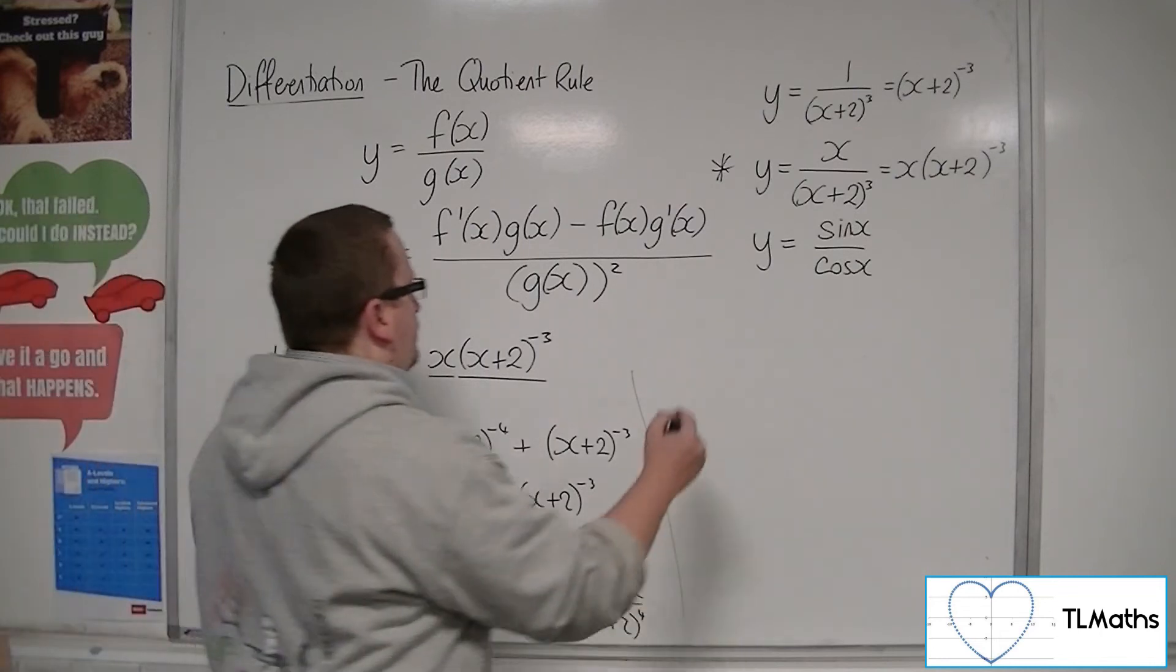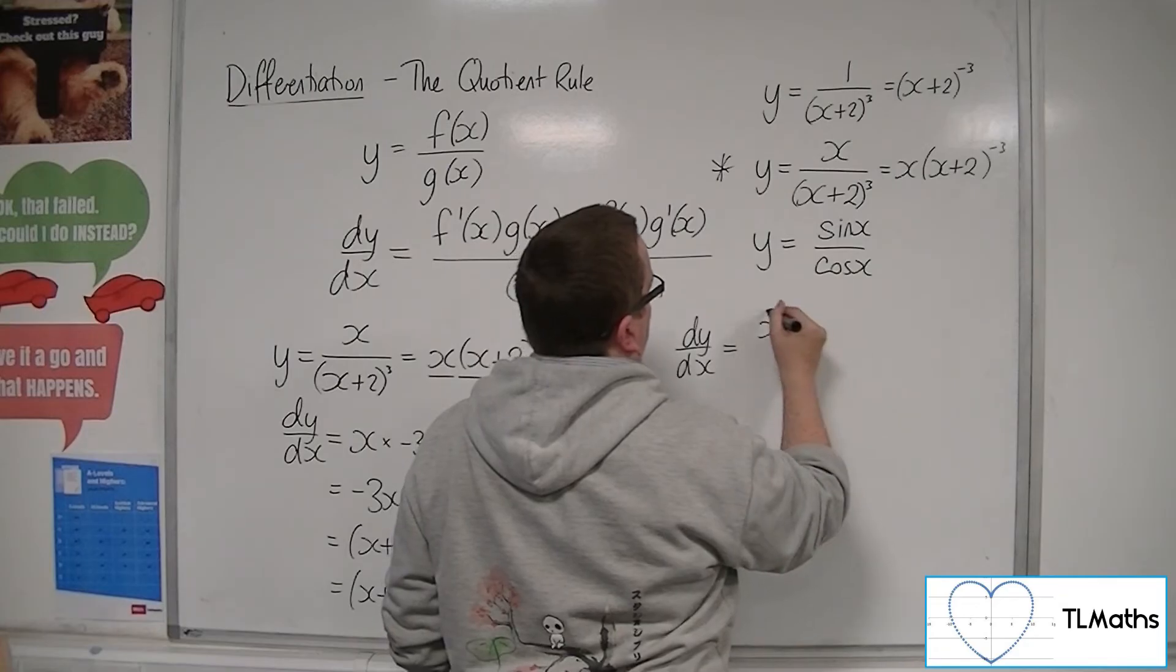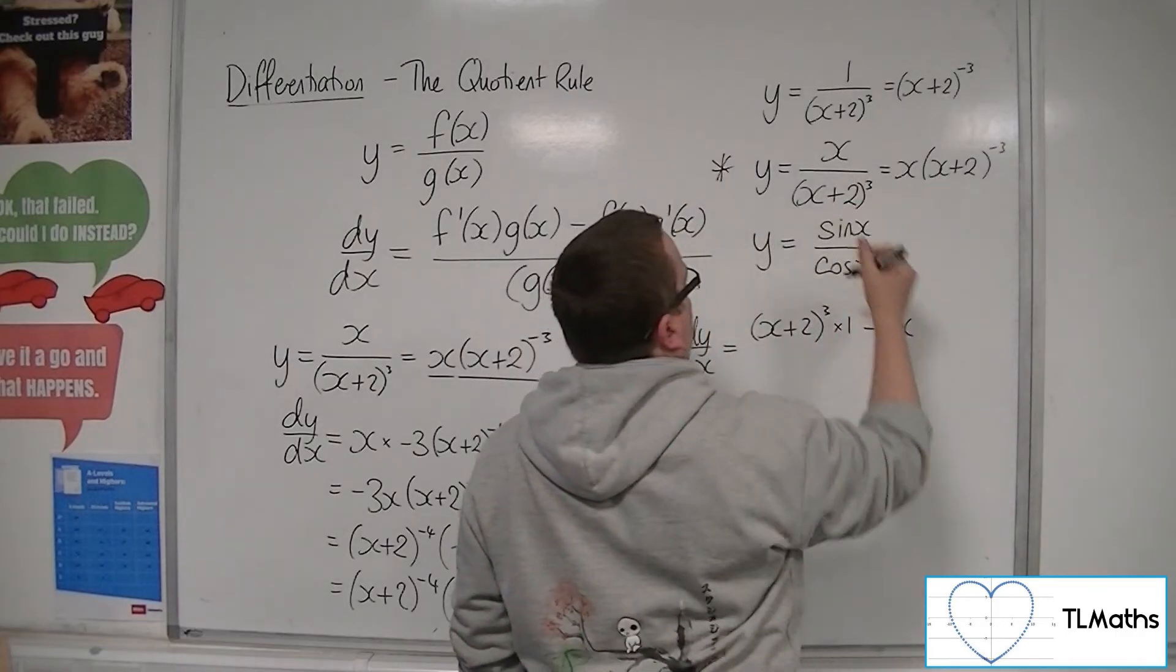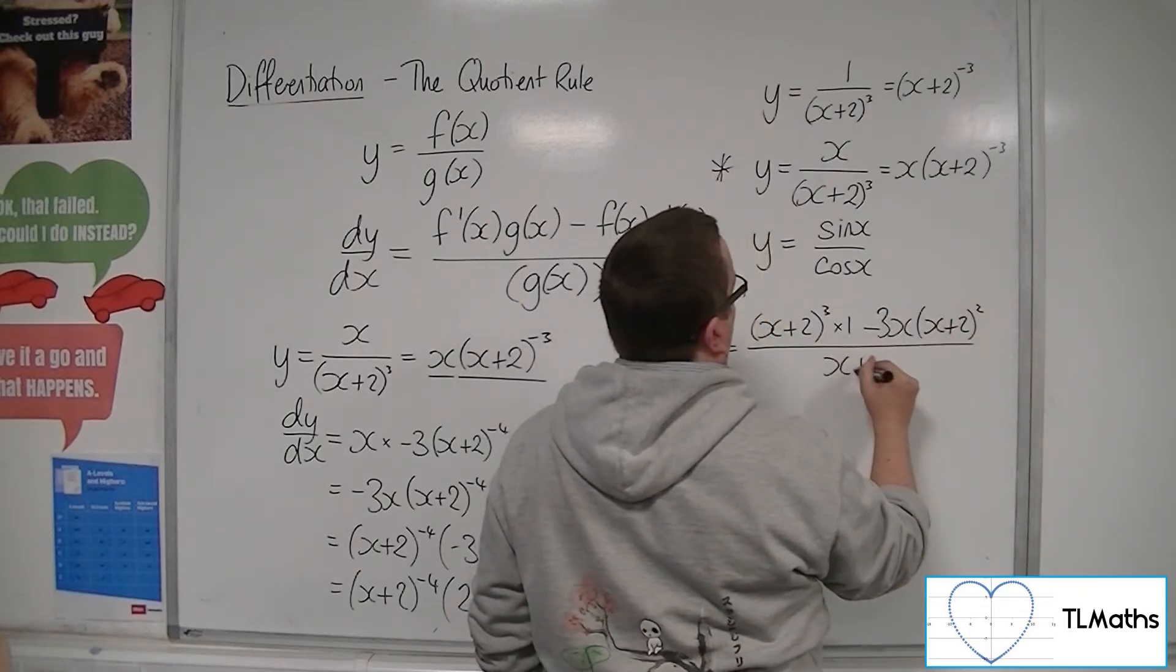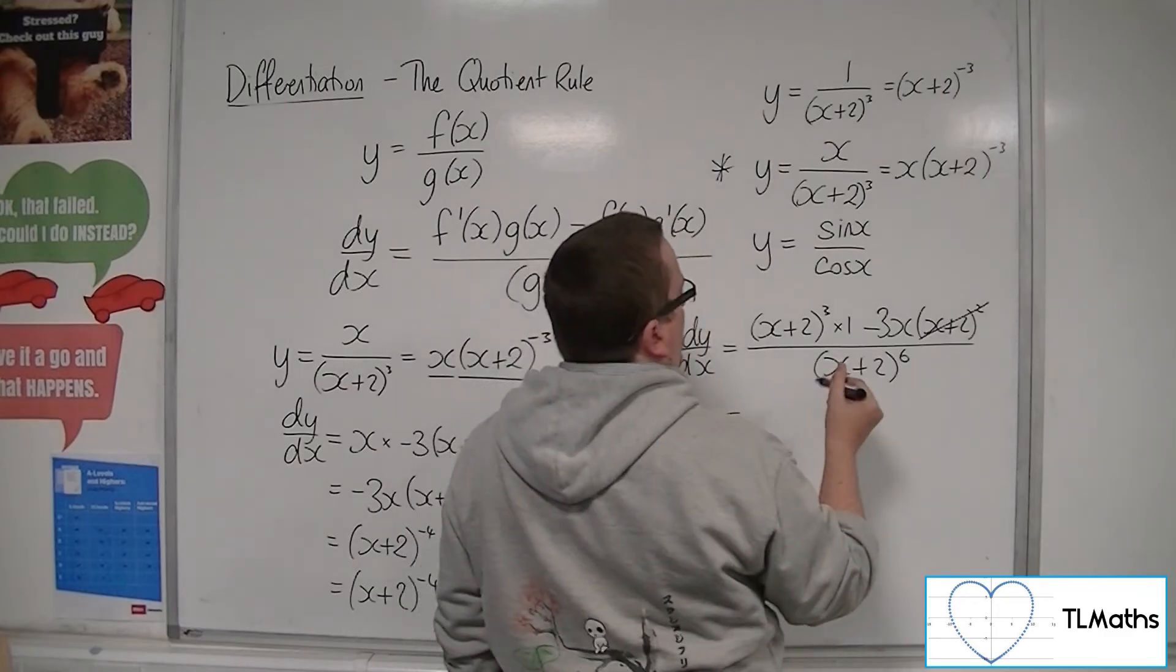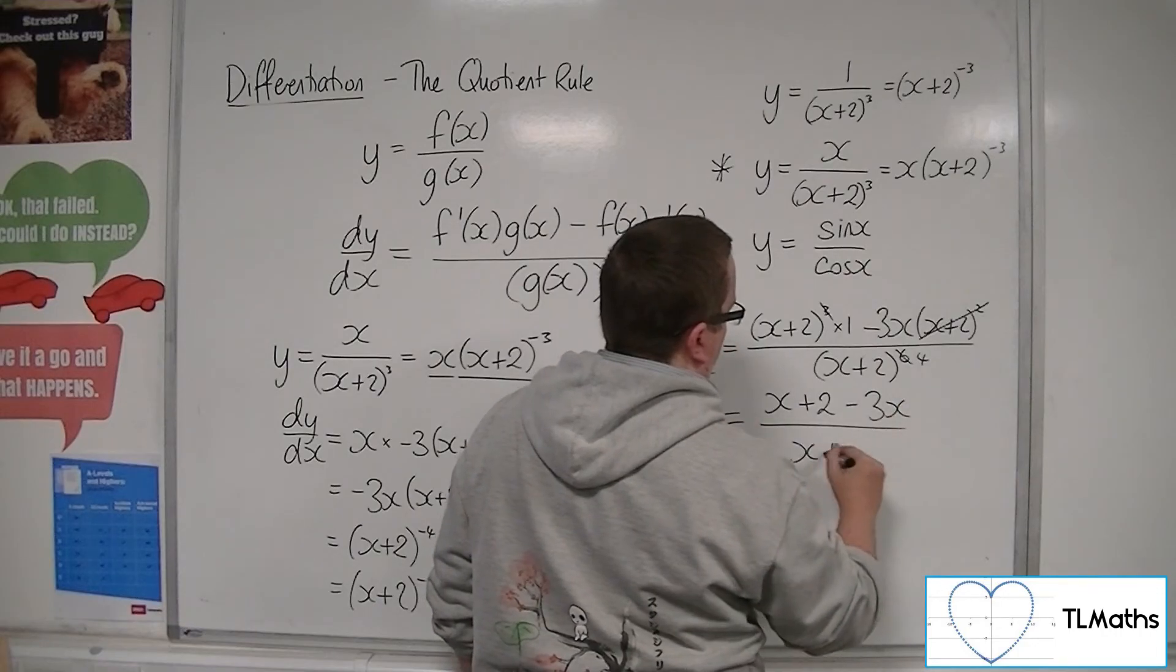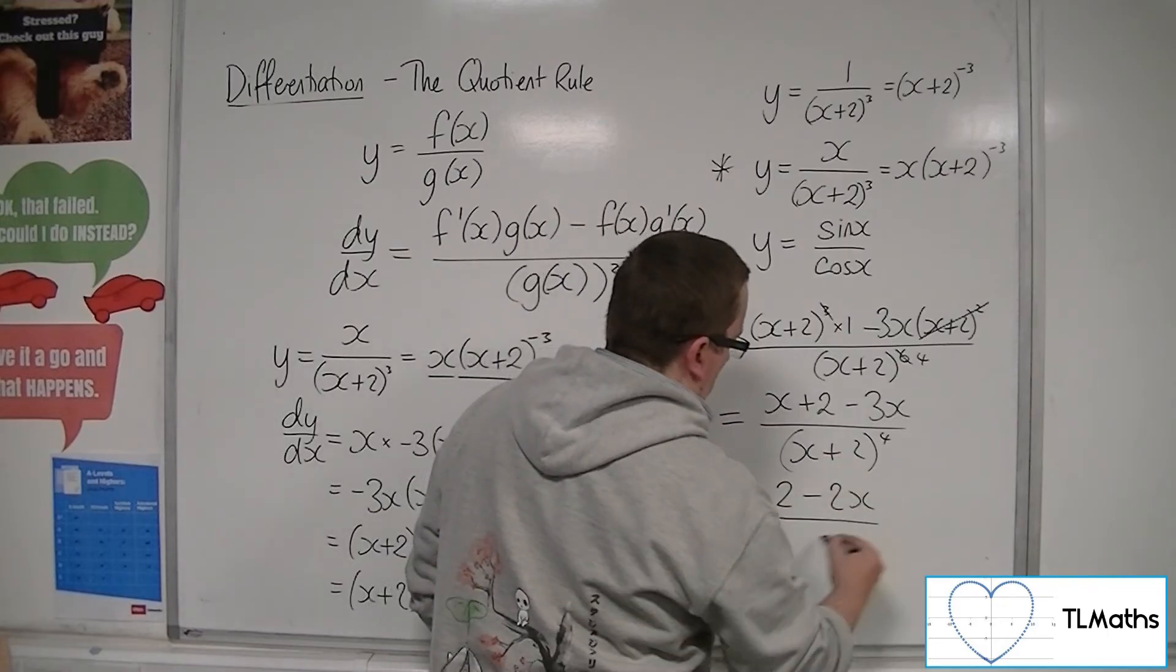If, on the other hand, you use the quotient rule, then you've got the bottom times the derivative of the top, which is just 1, take away the top times the derivative of the bottom, which is 3 lots of (x+2) squared, all over the bottom squared. You cancel an (x+2) squared from the top, cancel an (x+2) squared there and there, so that becomes 4. So you've got (x+2) take away 3x over (x+2) to the 4, and so you get (2 - 2x) over (x+2) to the 4.